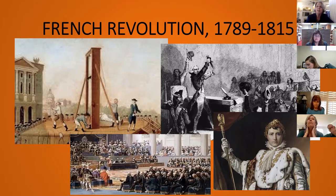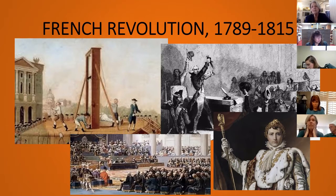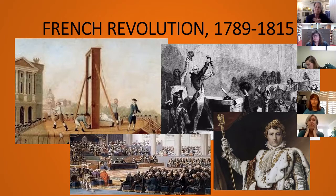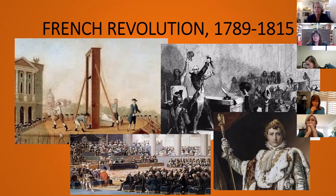Rather than going home, the Third Estate runs to the tennis courts built by Louis XIV and takes the Tennis Court Oath, swearing not to stop meeting until they have a constitution. They declare themselves the National Assembly. From there all heck breaks loose — the storming of the Bastille, considered France's independence day; the National Assembly repeatedly attempting to gain control of the government; the abolition of feudalism.